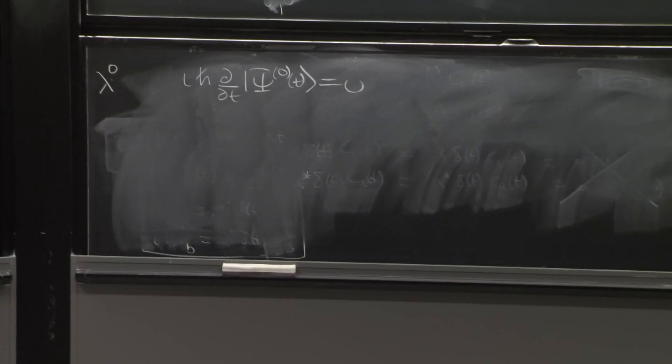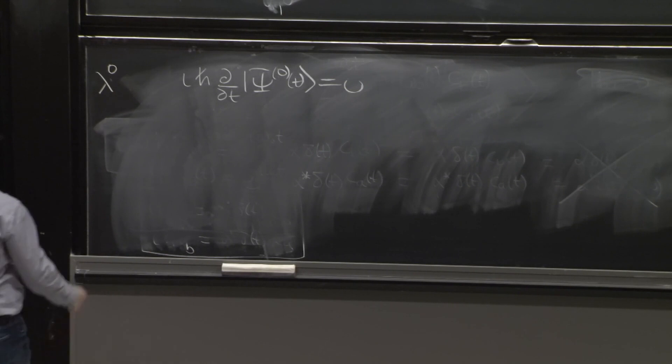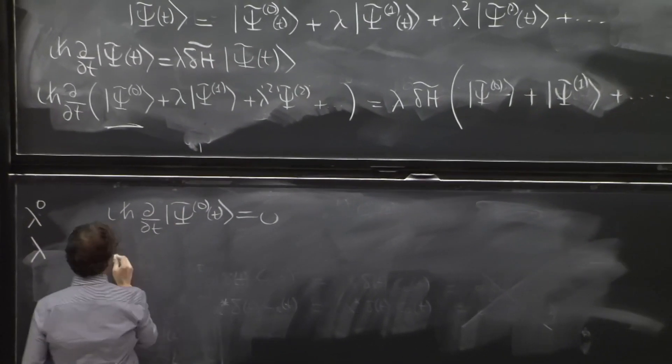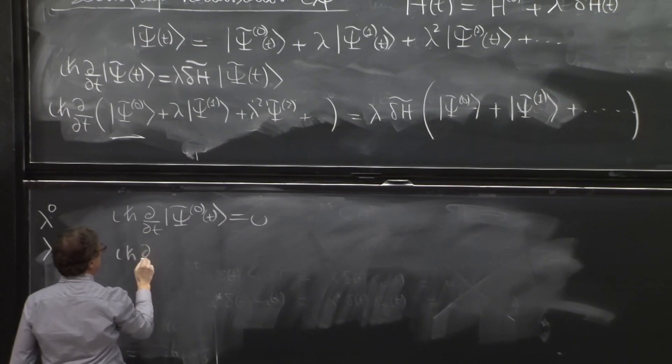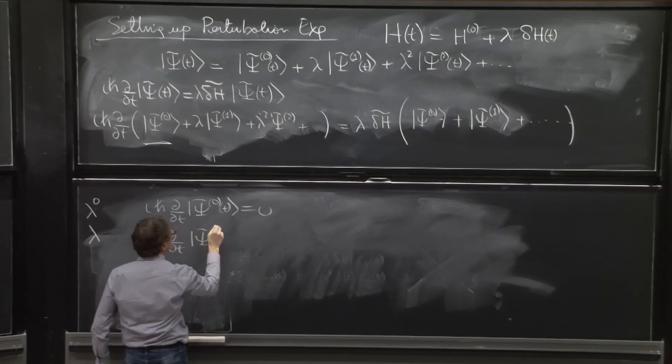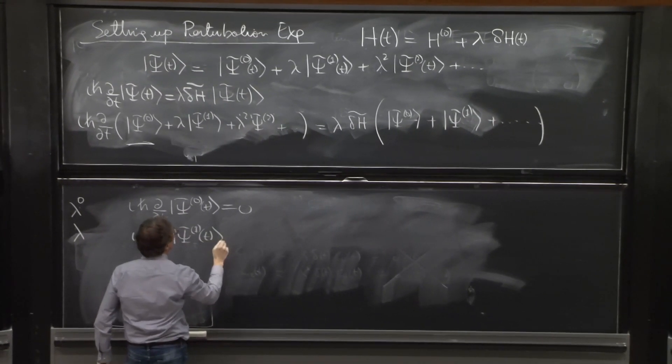Terms with order lambda already. Well, it was one term here, which is Schrodinger-like d dt of psi 1 is, in fact, equal to order lambda.